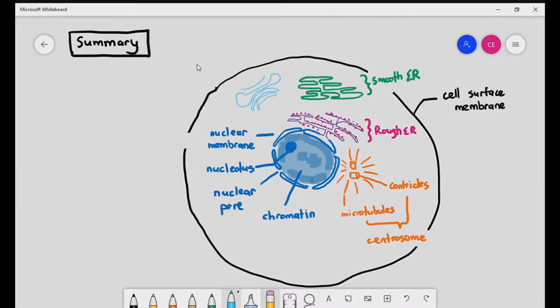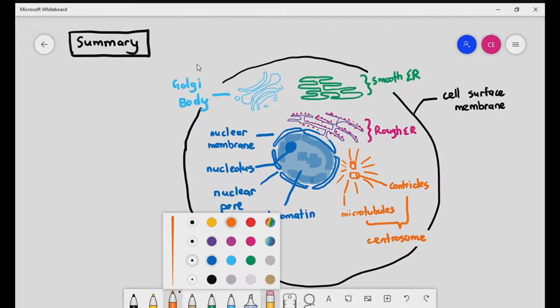Next, a stack of curved membranes and also single membrane organelles surrounded by vesicles. And that is the Golgi apparatus.